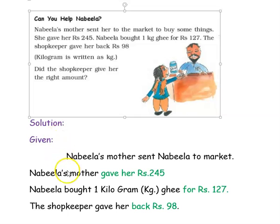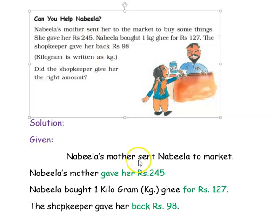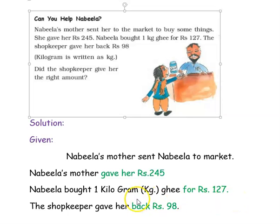This is the question — solution. First, let us see what is given. Nabila's mother sent Nabila to the market and gave her rupees 245. Nabila bought 1 kilogram — kilogram is represented as kg — ghee for rupees 127. The shopkeeper gave her back rupees 98.